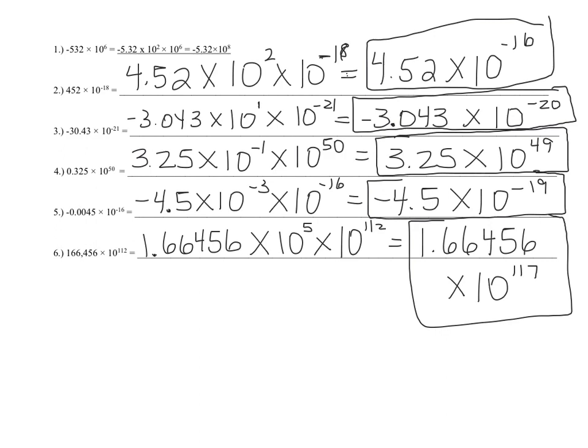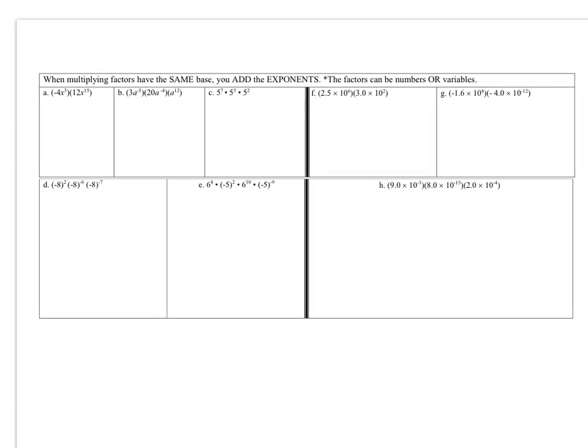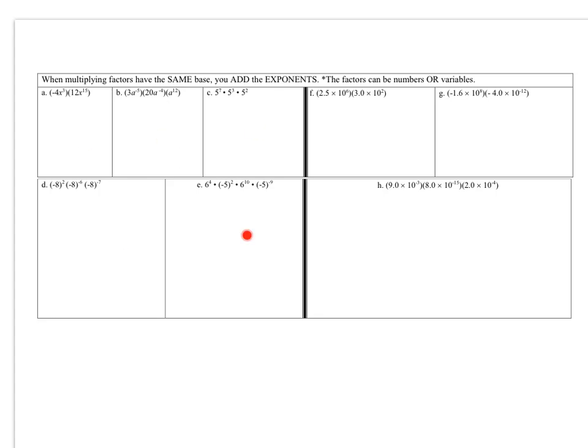Hopefully that will help you as we go through the rest of these examples. Now let's take a look at doing operations with scientific notation. I'll go through examples A through E, following the rules we figured out. In A, you multiply the coefficients: negative 4 times 12 is negative 48, and add the exponents to get x to the 18th.